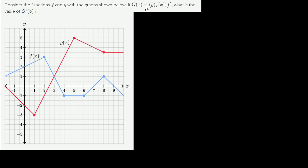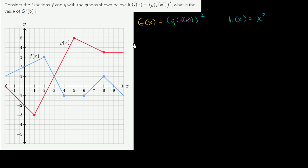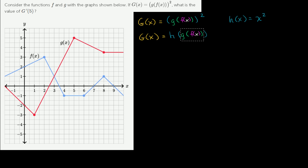Let's think through this somewhat complicated-looking function definition. We have capital G of x equal to this quantity squared, and what we're squaring is g of f of x. If h of x were equal to x squared, we could write G of x as h of g of f of x. So this is another way of writing G of x — we take g of f of x and put it into h of x, which is really just squaring it.